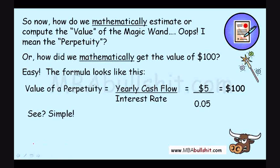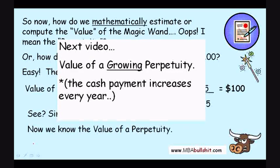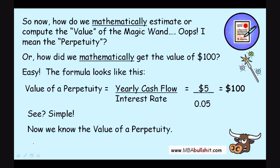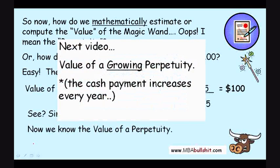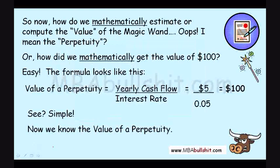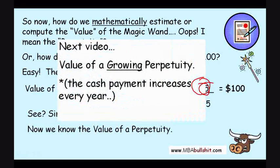You can see how simple it is to get the value of a perpetuity. Now that you know the basic concept, you're ready to move on to our next video on the value of a growing perpetuity, where the cash payment increases every year. In this case it was just a flat $5 every year, but what if it increases every year — bigger than $5, then bigger the next year, and even bigger the year after? That is called the value of a growing perpetuity, and you can check out that next video on mbabullshit.com.